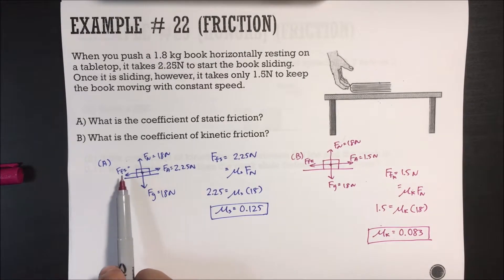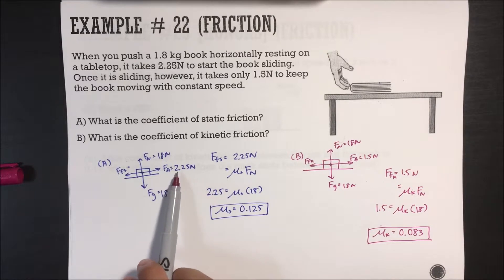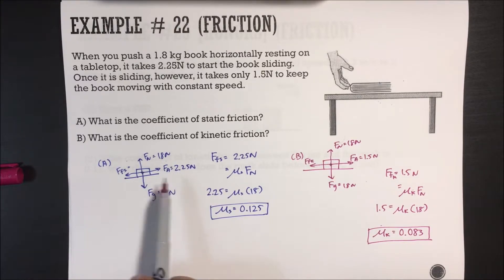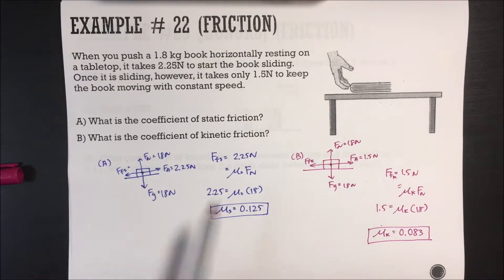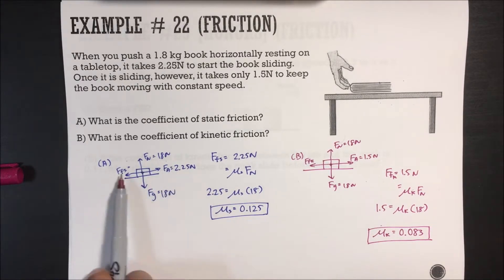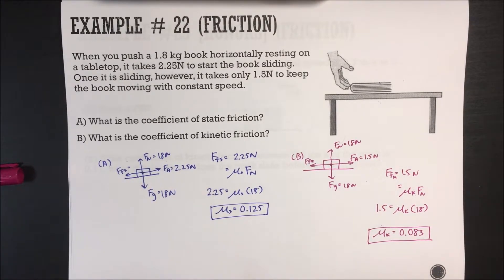The force of friction static is equal to the applied force at the point of motion because if you exceed it, it starts moving — so the two are equal at that threshold.